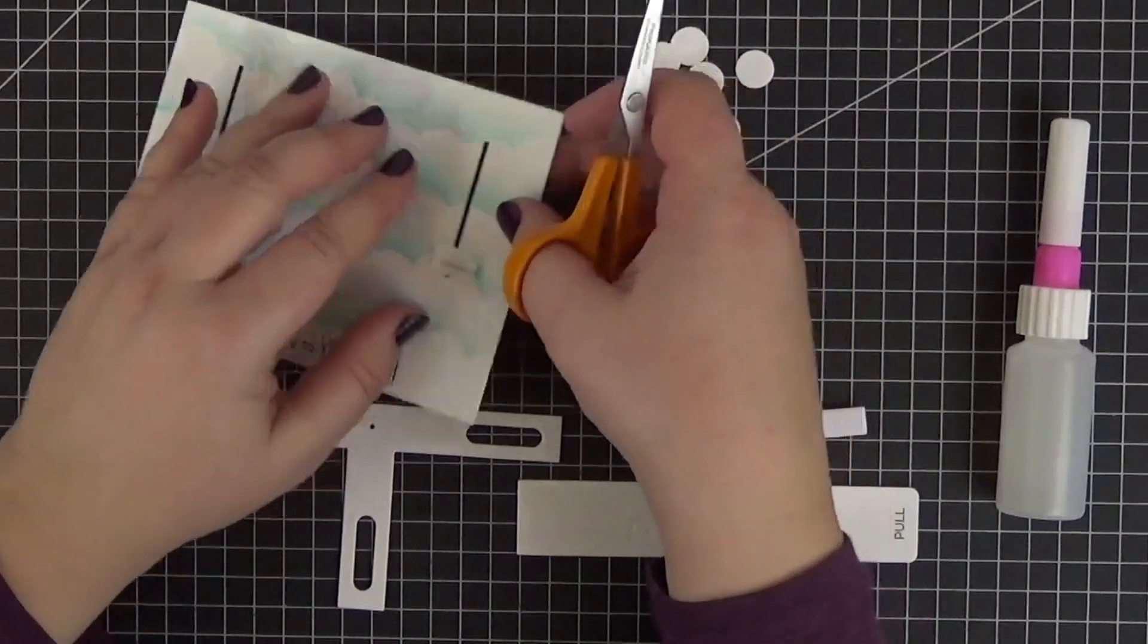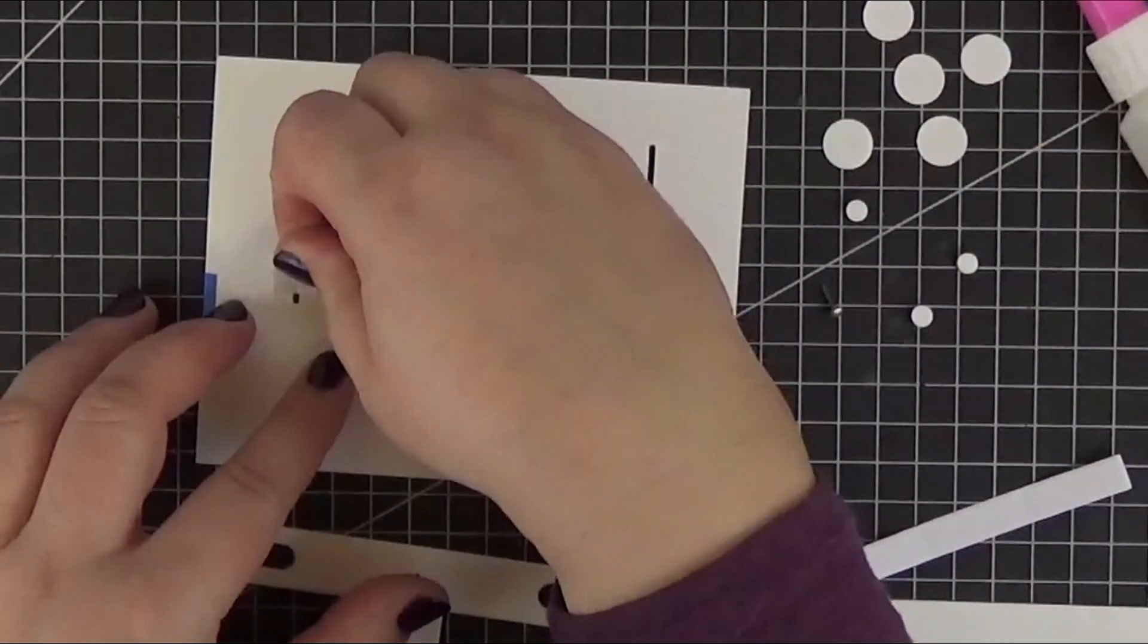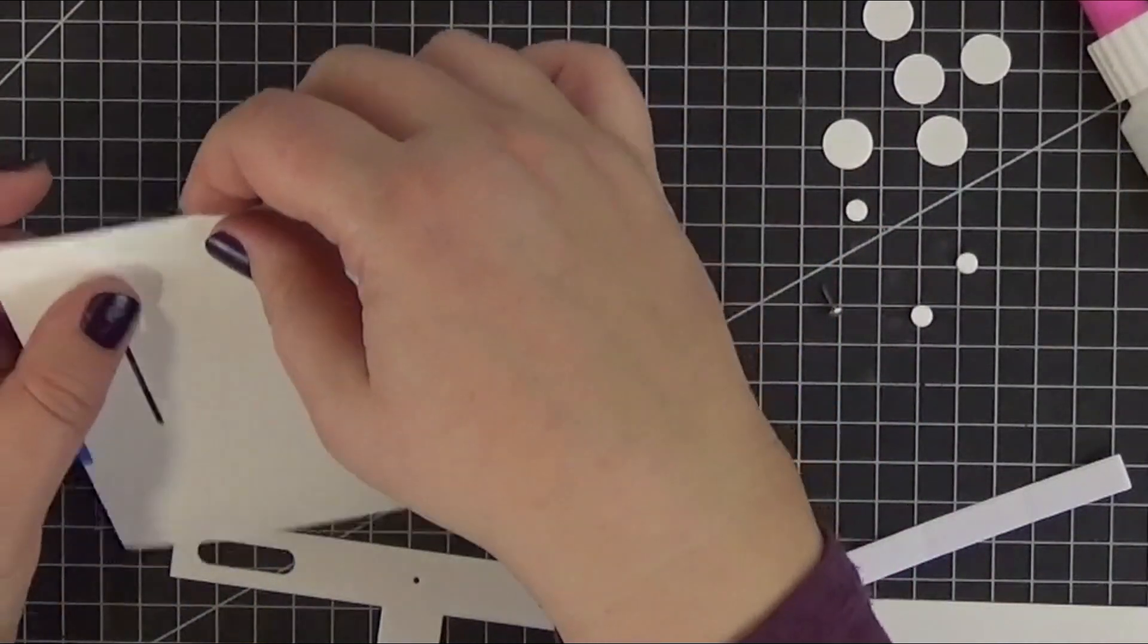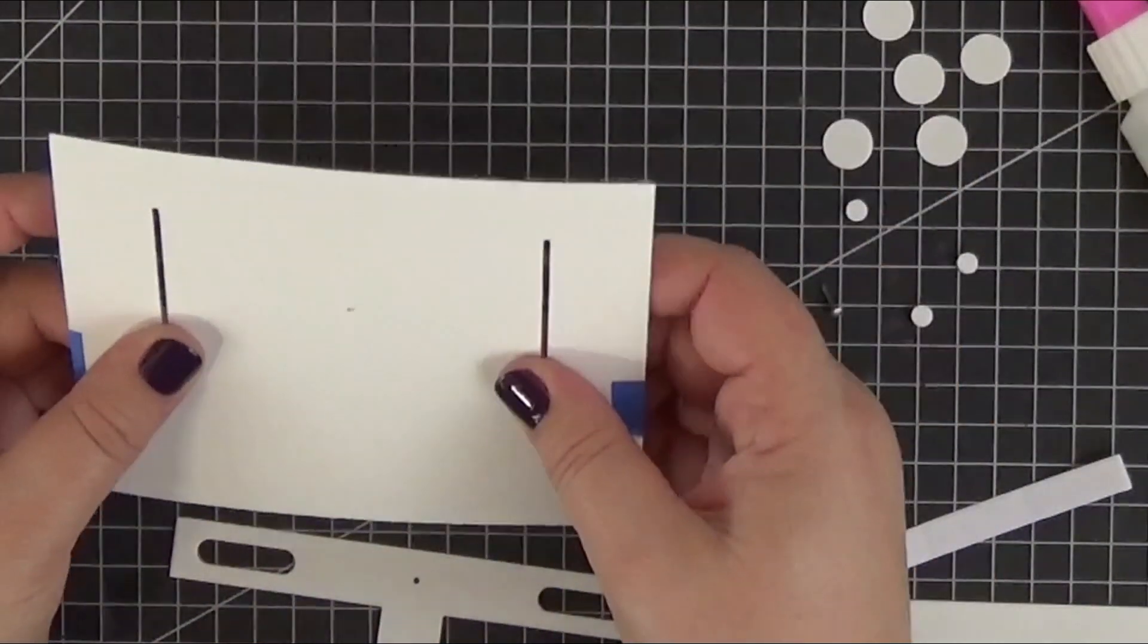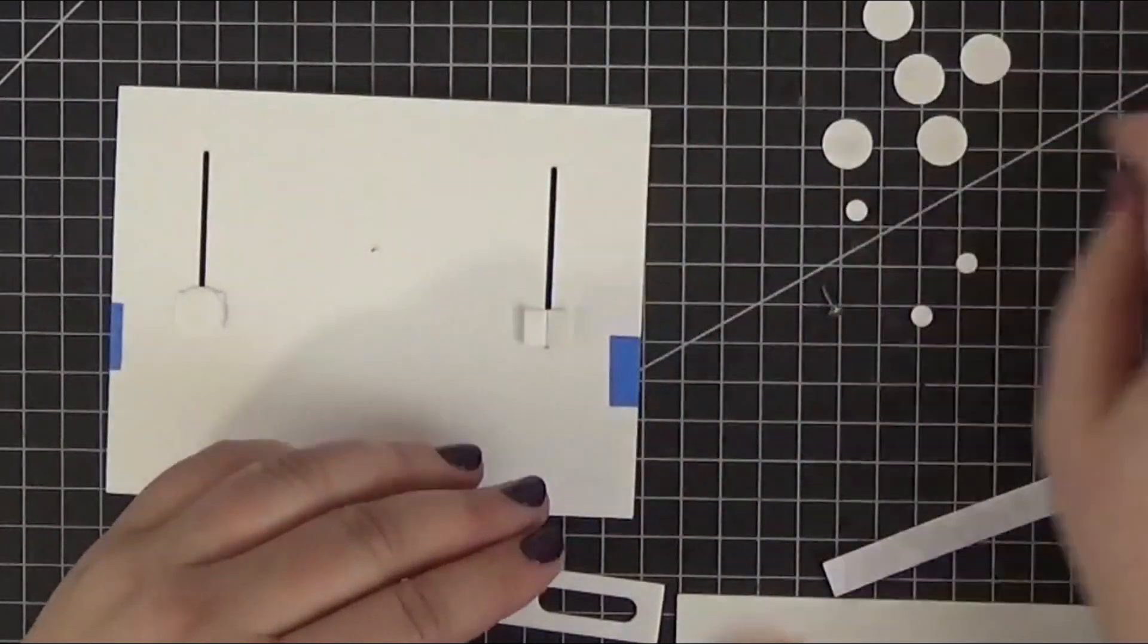Once again, getting rid of the excess and checking the movement. Now we can flip the panel and attach two of the die cut circles to the back of these pieces. You can either use double-sided tape or liquid glue, always making sure not to get any of the glue on the slits.